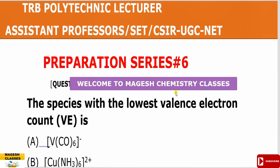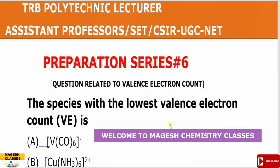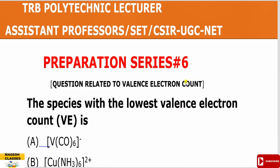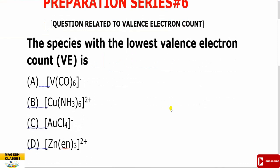Hello viewers, welcome to my guest chemistry classes. This is Preparation Series 6, TRB Polytechnic Registrar, Assistance Proposals, SET and CSIR UGC Net Examination Preparation. In this presentation, we have a basic concept: the species with the lowest valence electron count, 18 electron rules and the structure of polynuclear complexes. We will approach Question 7.